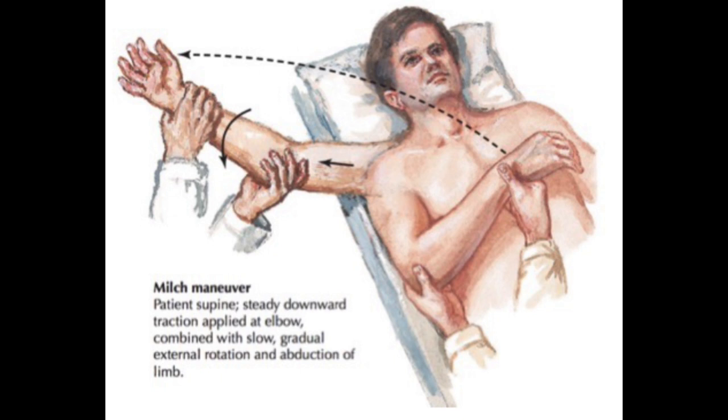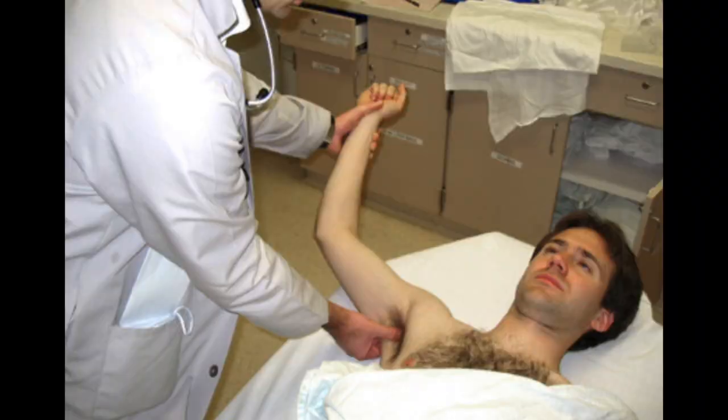If reduction is not achieved after full external rotation, I typically add the Milch procedure: slowly abduct the arm away from the body while keeping it externally rotated until the arm is in an overhead position. Reduction is oftentimes achieved in this position — you will feel the shoulder suddenly return into the joint capsule from the pull of the rotator cuff and external rotators. If reduction is still not achieved, apply general traction pulling on the wrist away from the body in line with the humerus while applying direct pressure over the humeral head inside the armpit with the thumb of your other hand. For many patients this will be too painful and you'll need to sedate the patient, which deserves its own podcast.